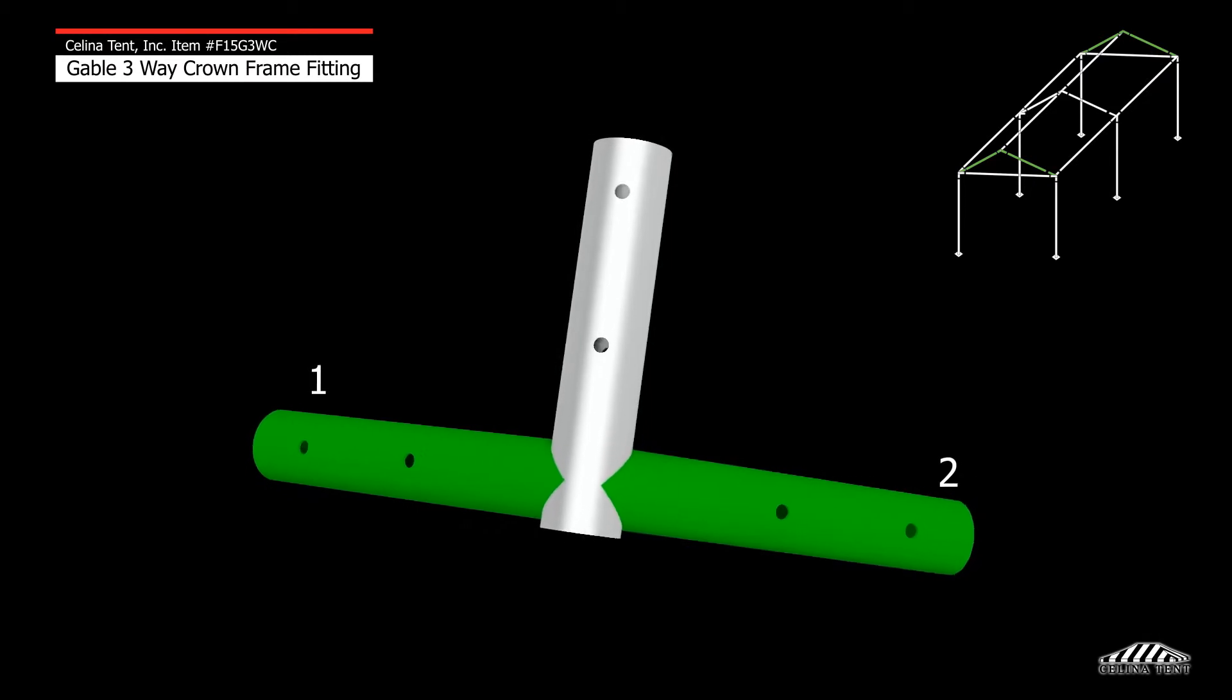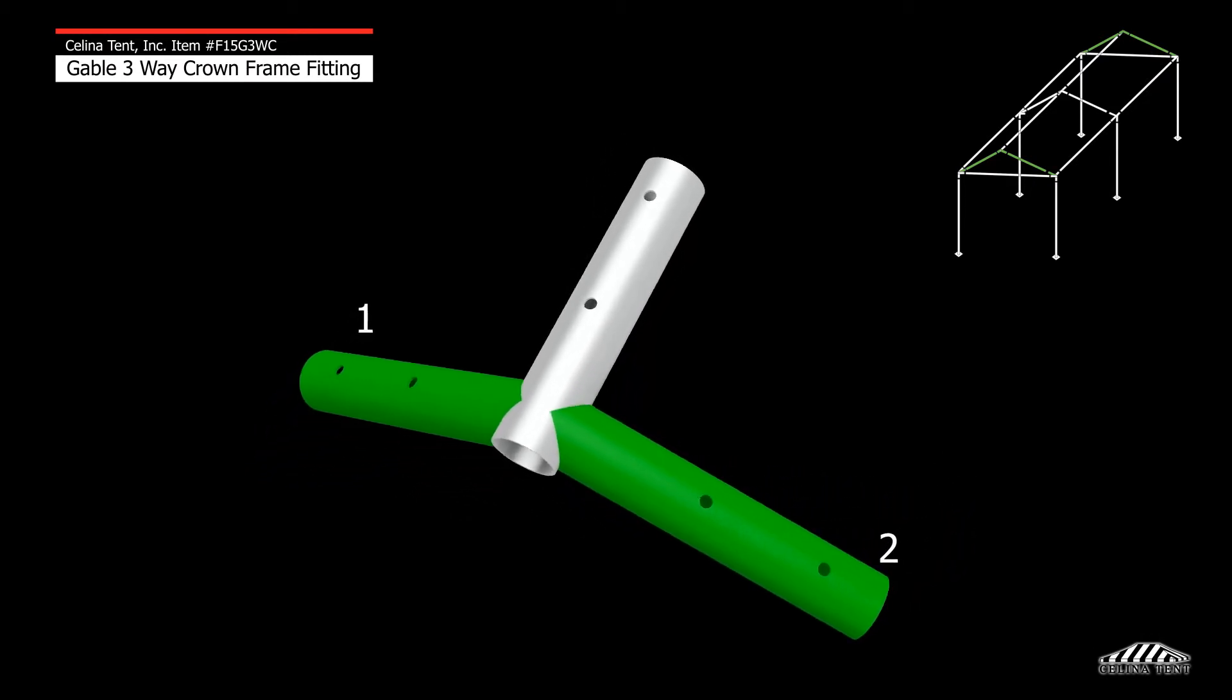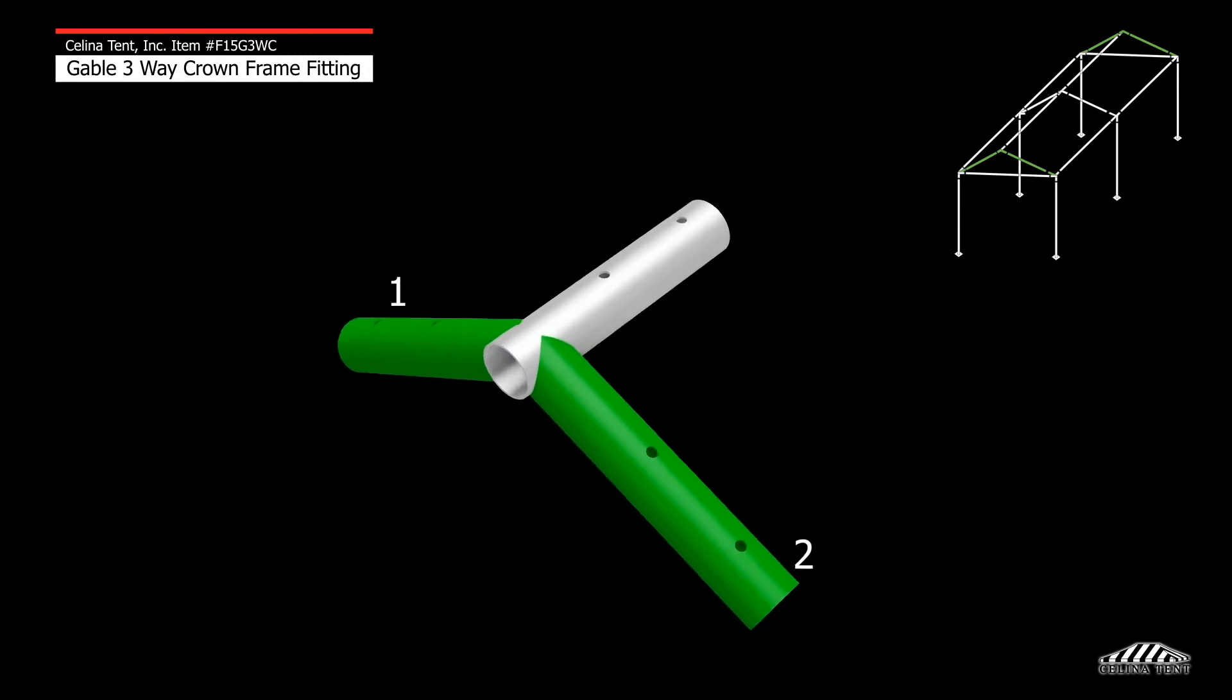The angled protrusions one and two will connect with the rafters and then connect to the gable left corner and gable right corner fittings.